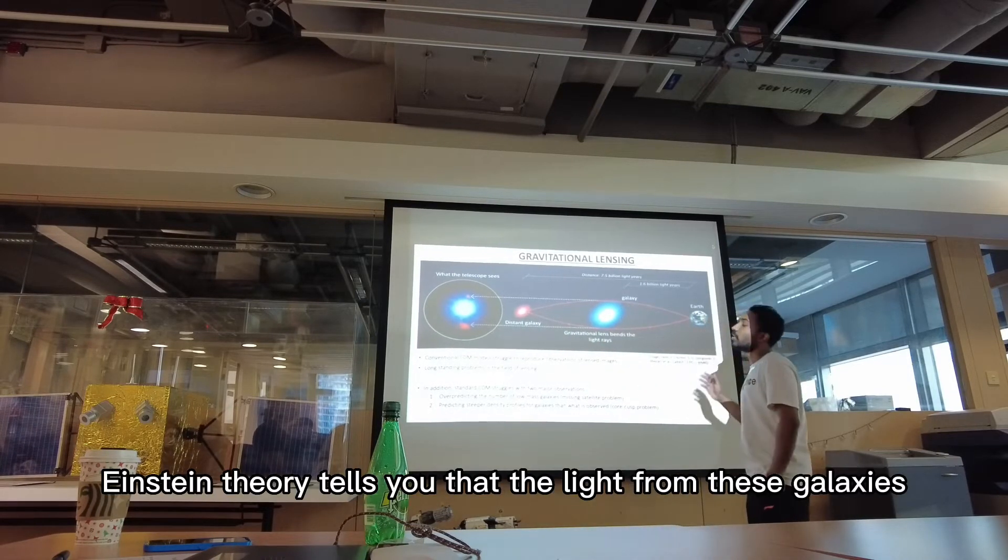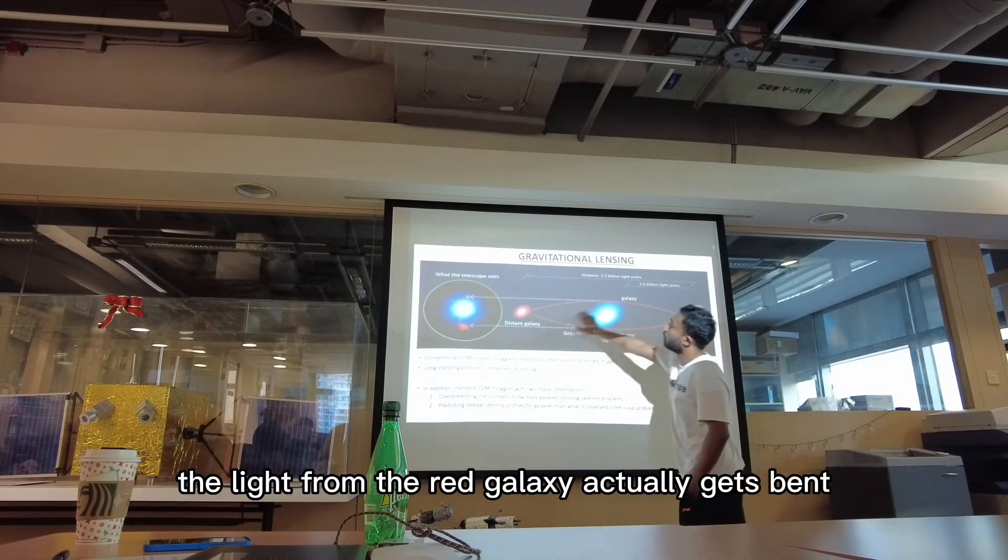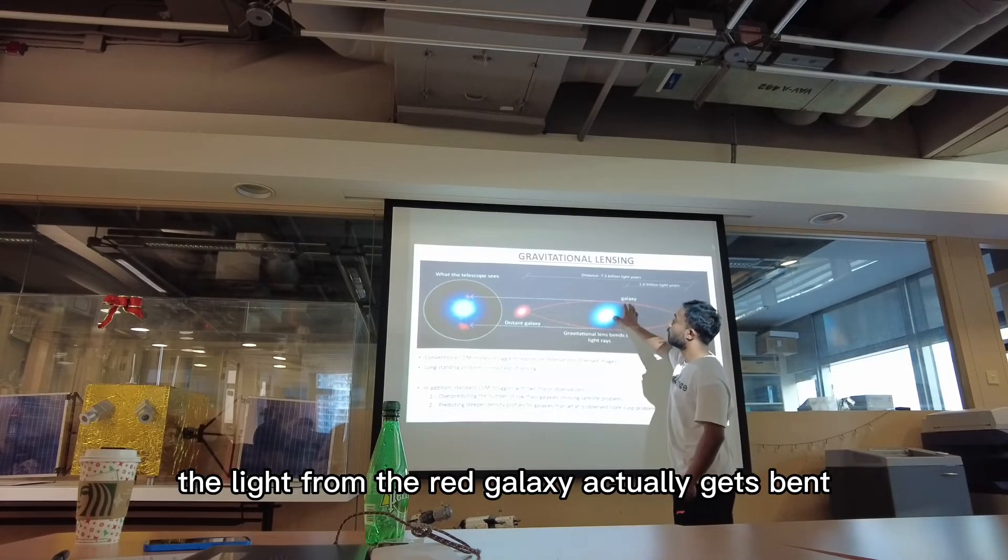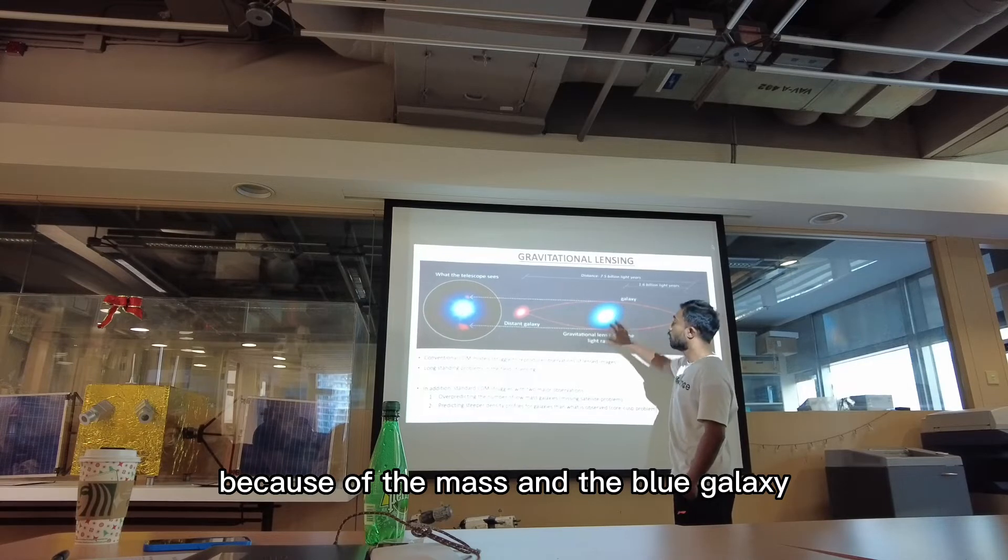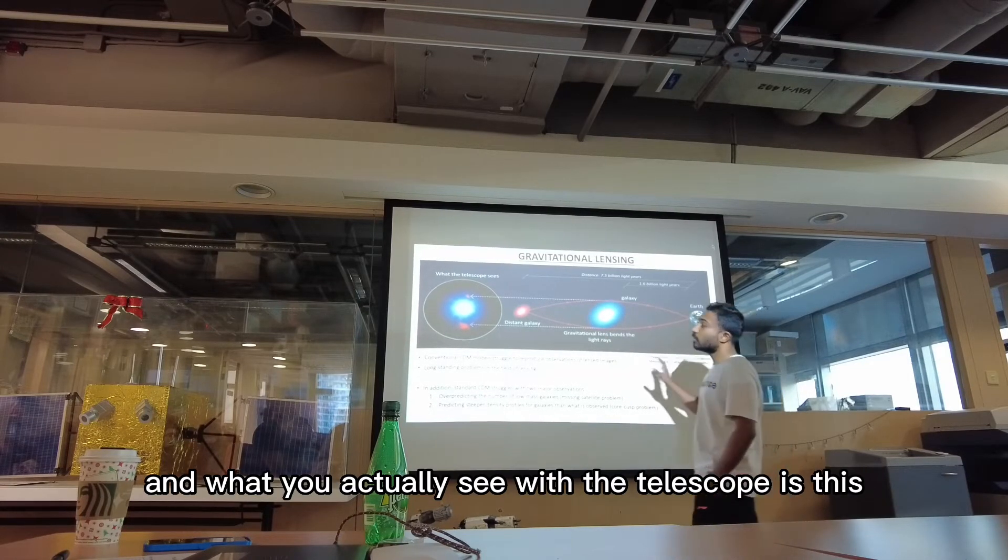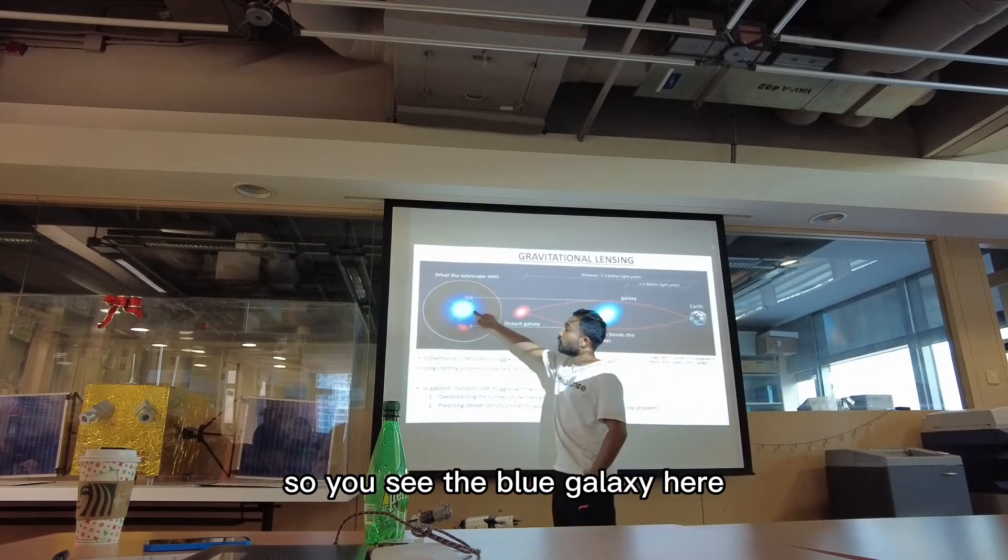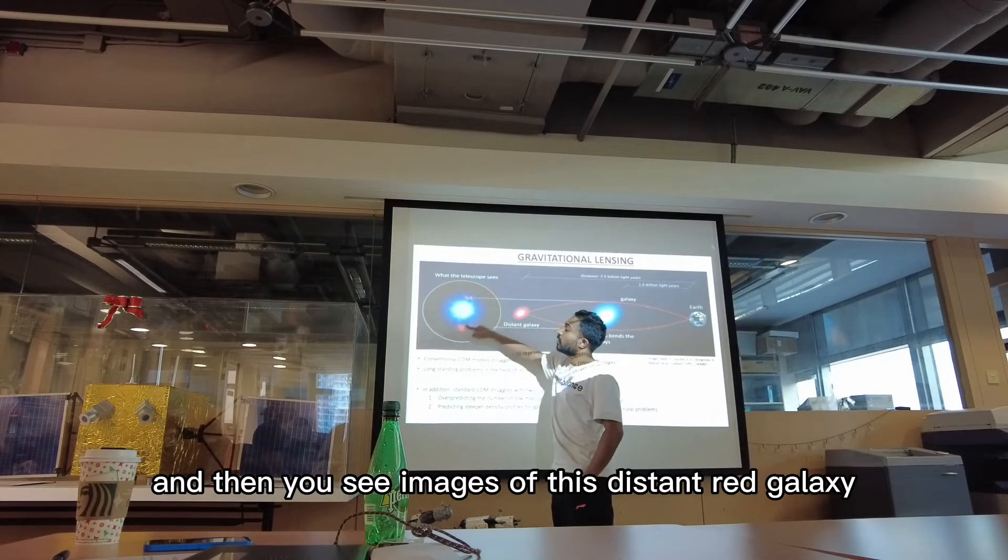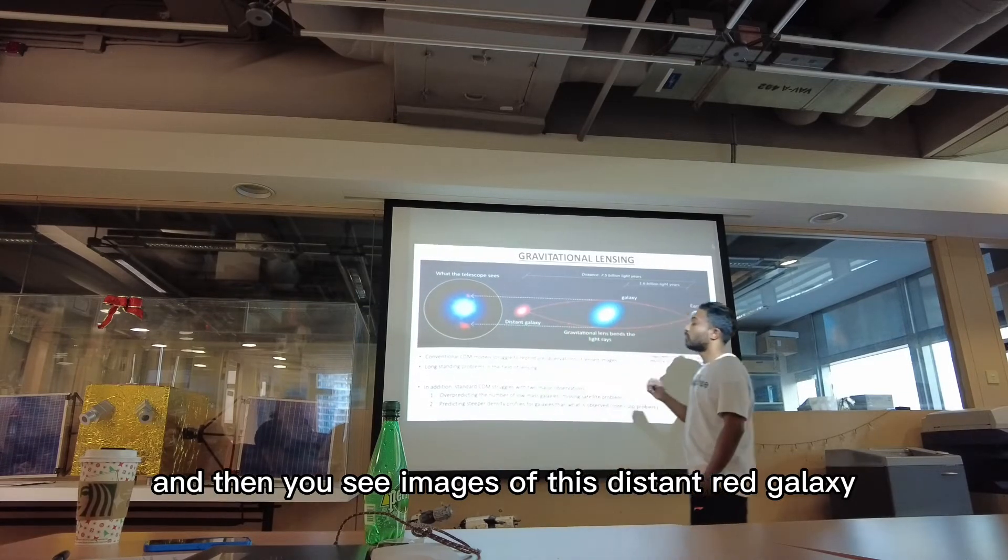Now Einstein's theory tells you that the light from these galaxies, the light from the red galaxy, actually gets bent because of the mass in the blue galaxy. And what you actually see with the telescope is this. So you see the blue galaxy here and then you see images of this distant red galaxy.